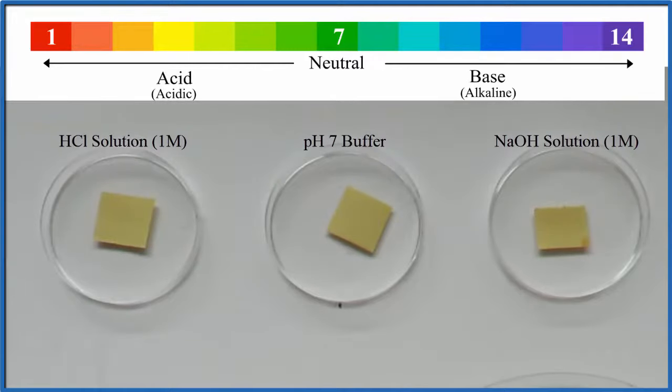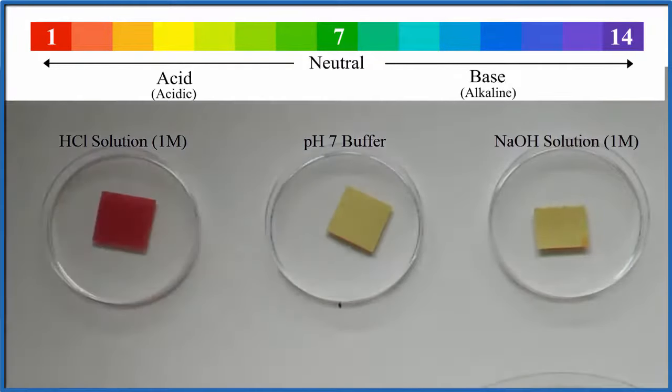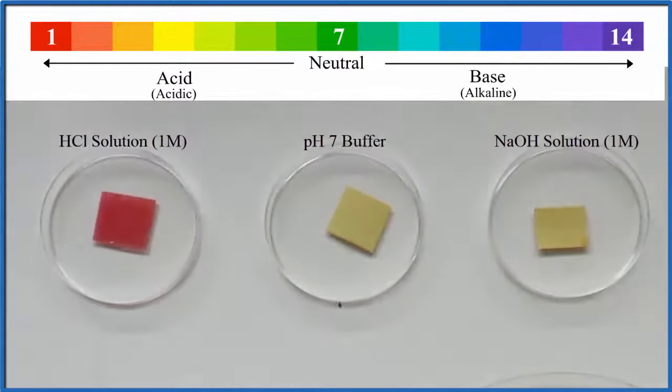And what we want to do is make sure the scale matches the pH paper we're using. So first off we'll put some hydrochloric acid, this is pH zero, on the paper and it turns that red just like the scale.